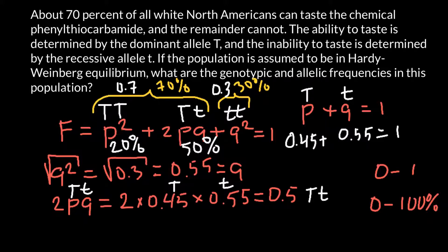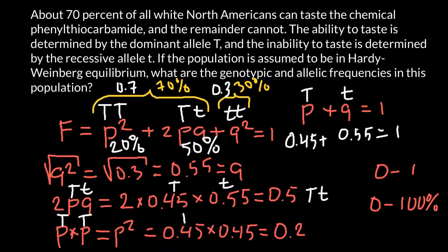But you also can find this number the other way. We can do p multiplied by p, or p squared, which equals 0.45 multiplied by 0.45. The rounded answer would be 0.2, or 20%. This is going to be the genotype homozygous dominant.